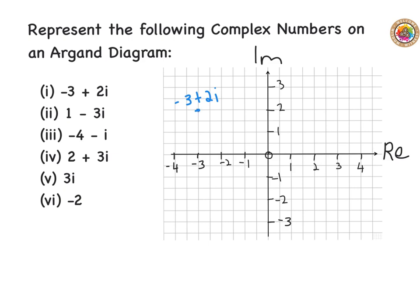The next one is one minus three i. I go to one on the real axis and down to minus three on the imaginary axis. This point here is one minus three i, and I'm going to mark that in and label it one minus three i.